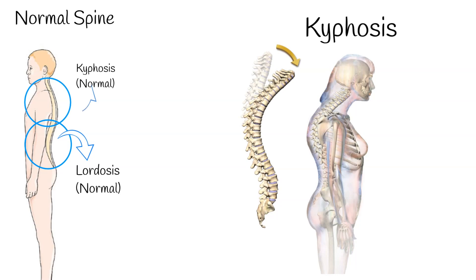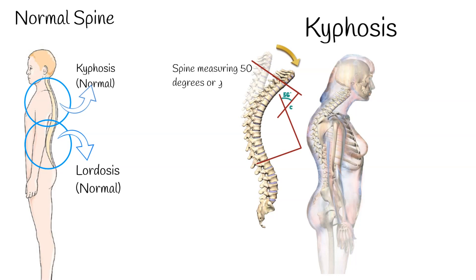The normal spine can bend from 20 to 45 degrees of curvature in the upper back area. Kyphosis is considered pathological and is defined when the curvature of the spine measures 50 degrees or greater on an x-ray.